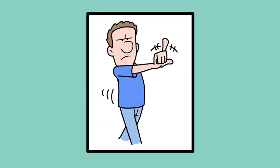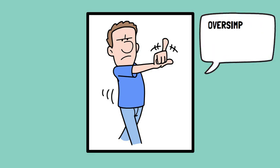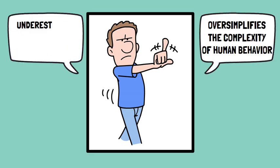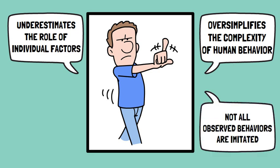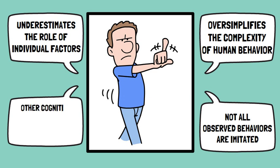Critics argue that observational learning theory may oversimplify the complexity of human behavior and underestimate the role of individual factors. Additionally, not all observed behaviors are imitated, and other cognitive processes may mediate the observational learning process.